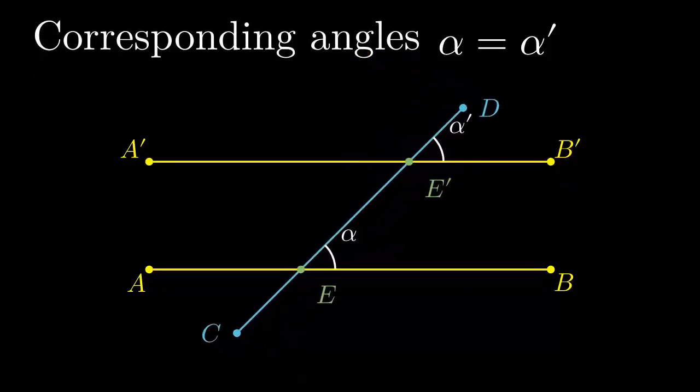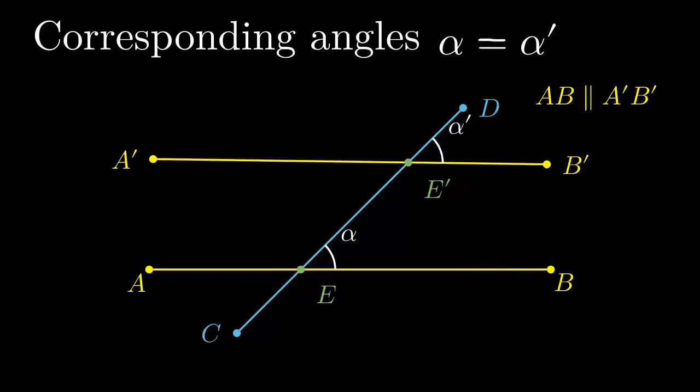This is only true when AB and A' B' are parallel. The line CD is called transversal. So far, we saw a lot of angles. Corresponding angles have the same measure when the lines are parallel. Being parallel is the key here.